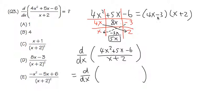...and the numerator, as what we found, is just (4x - 3)(x + 2), over the bottom which is x + 2.